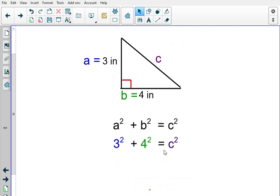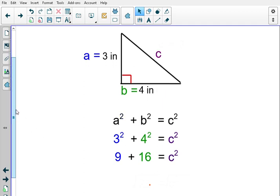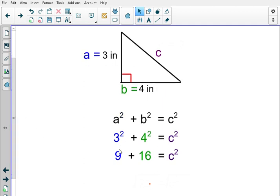Next, we're going to simplify. We're going to go ahead and square these. So, we have nine plus 16 equals C squared. We can simplify by combining nine and 16, which gives us 25. So, 25 is equal to C squared.